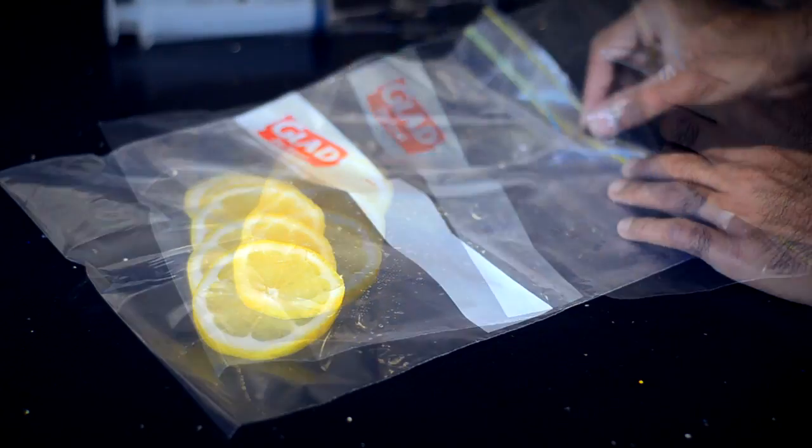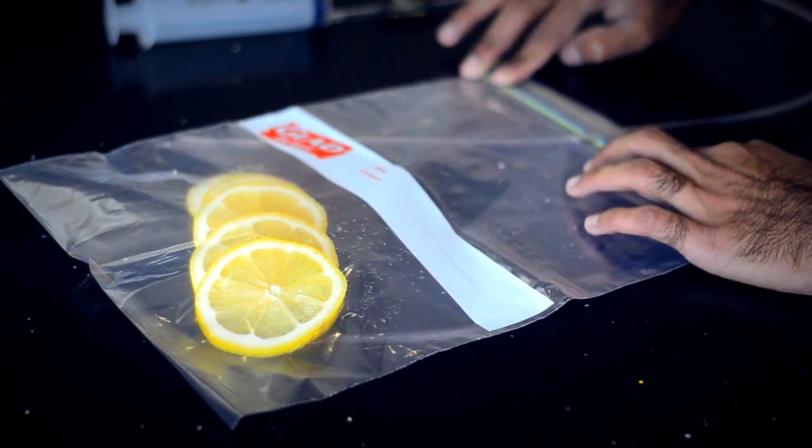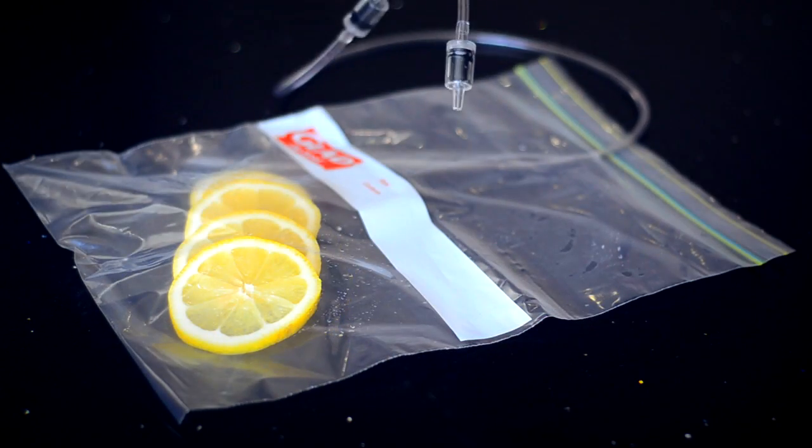Once you've inserted the airline into the hole, seal up the bag and pump the syringe repeatedly until you remove all air from the bag.